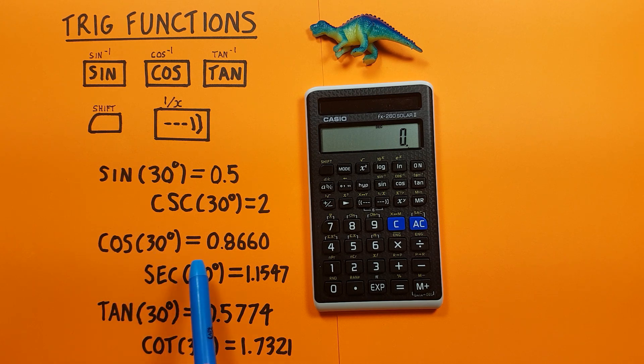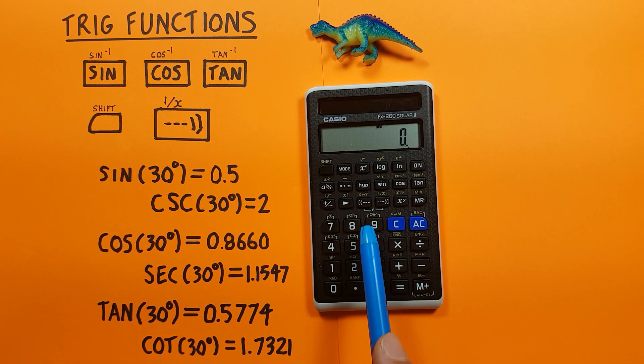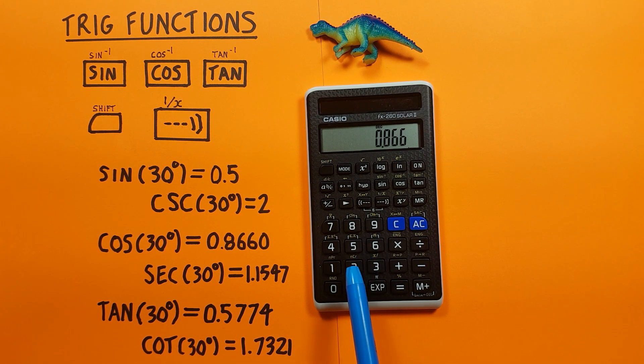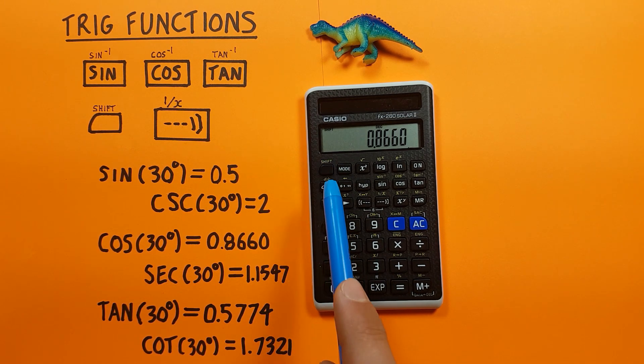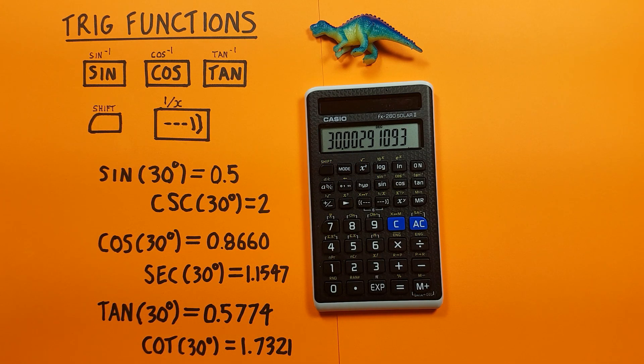For arc cos of 0.8660: enter the 0.8660, shift, cos. And this brings us back to what would roughly round to 30 degrees.